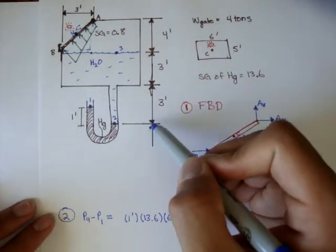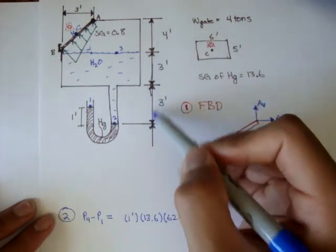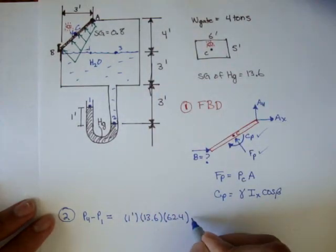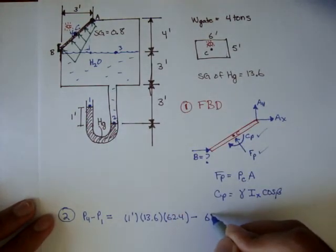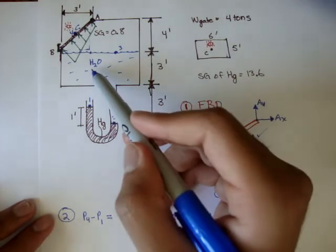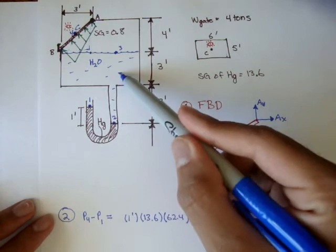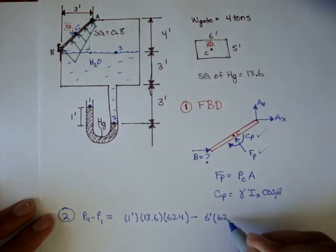And, then, from two to three, we go up three, or we go up six feet. And, if we go up, that means the pressure is negative, or it's decreasing in pressure. So, it's six feet, and then, the specific weight of water is 62.4.